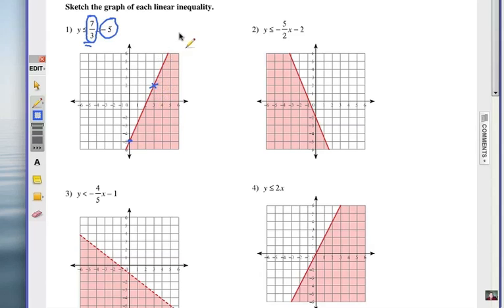You go up seven and over three, and then you can put a little mark there. Now you can continue to do that again if you want, but you're going to run out of space. Basically now you can connect the lines, but since it's an equal bar down there, less than or equal to, solid line. Now remember that you're going to test a point on one side of the line, and the easiest point most of the time is the origin, that's zero, zero. If you substitute, is zero less than or equal to seven-thirds times zero, take away five? Is zero less than or equal to negative five? Since that's false, shade on the other side.